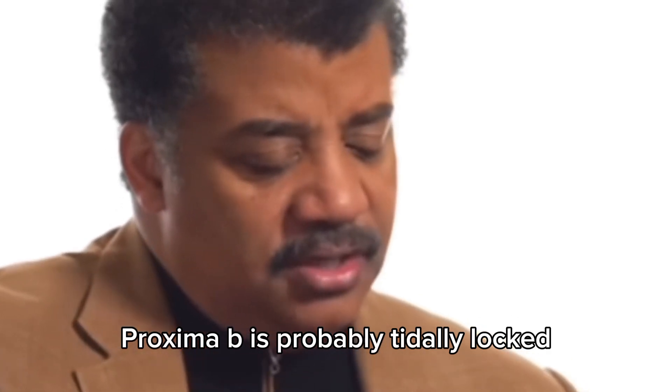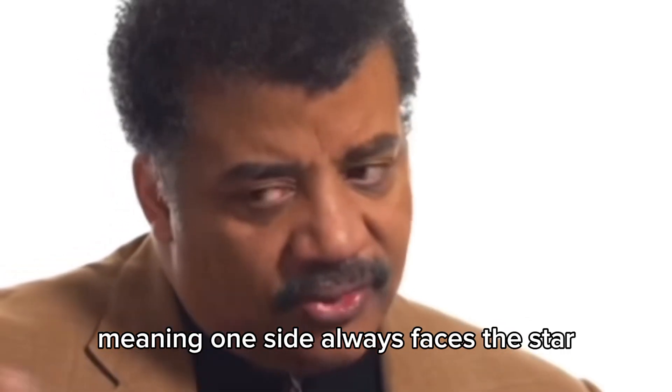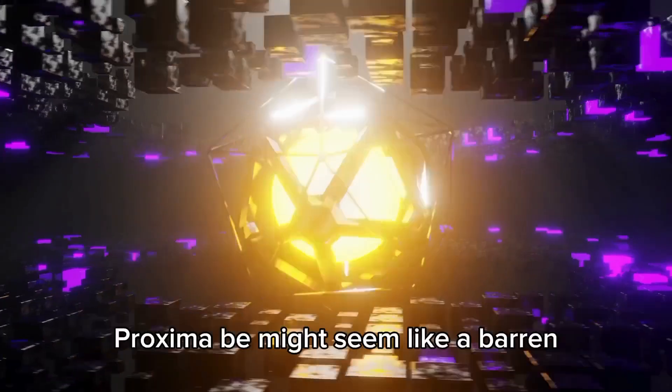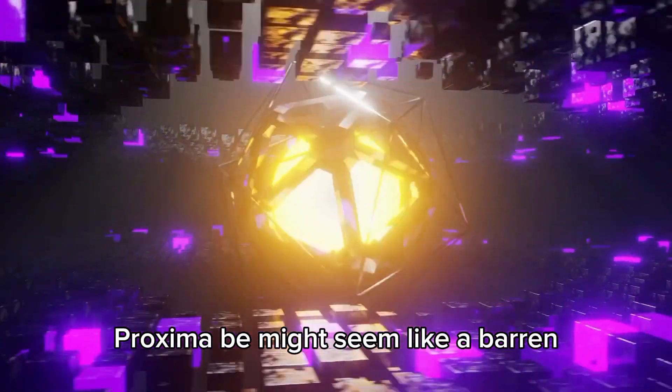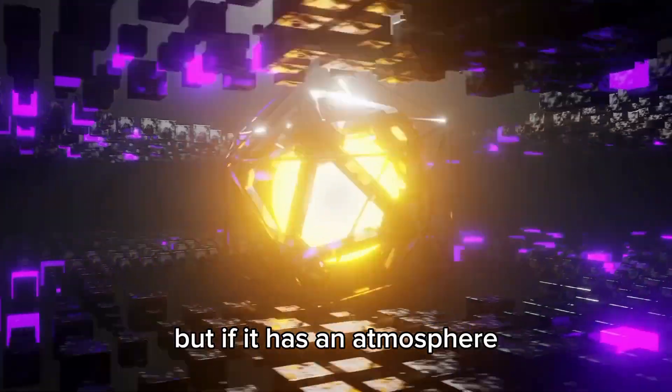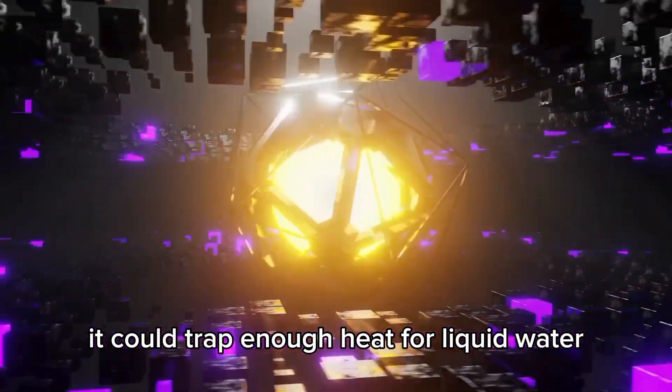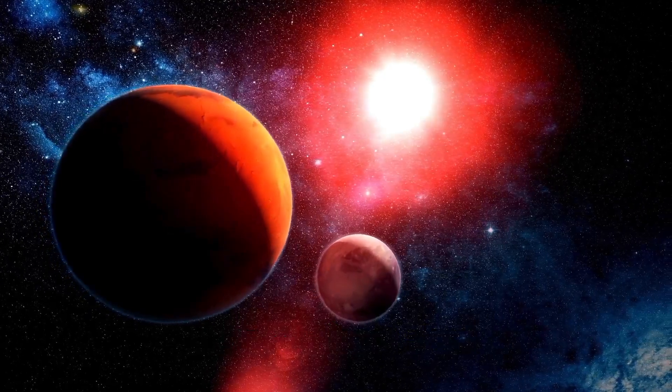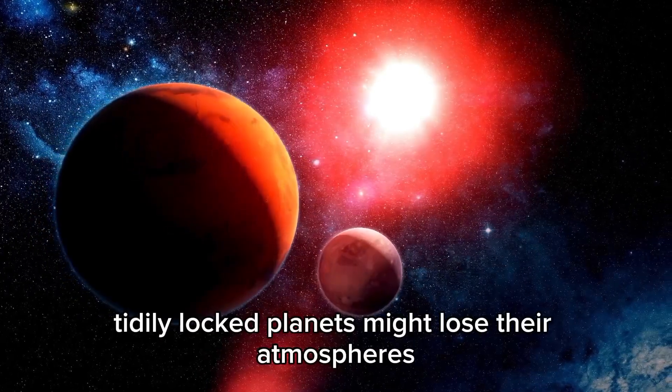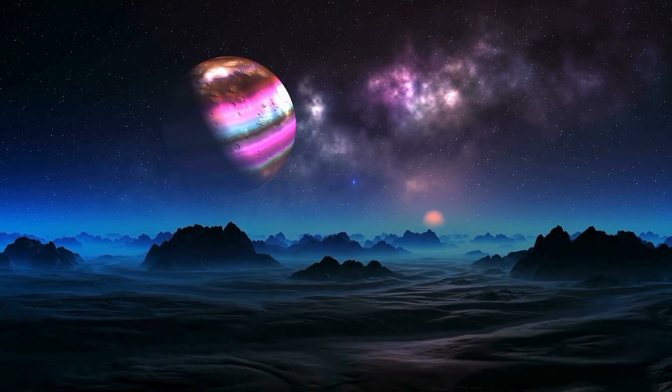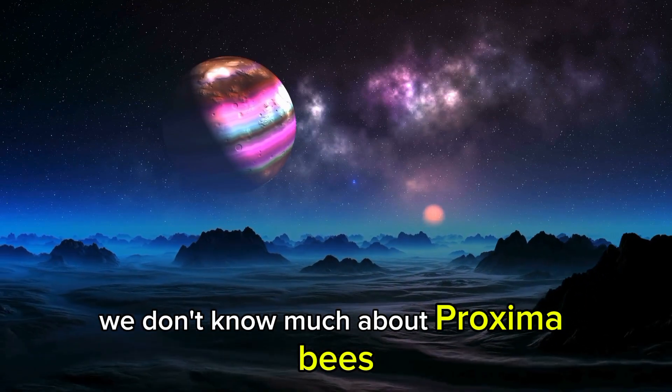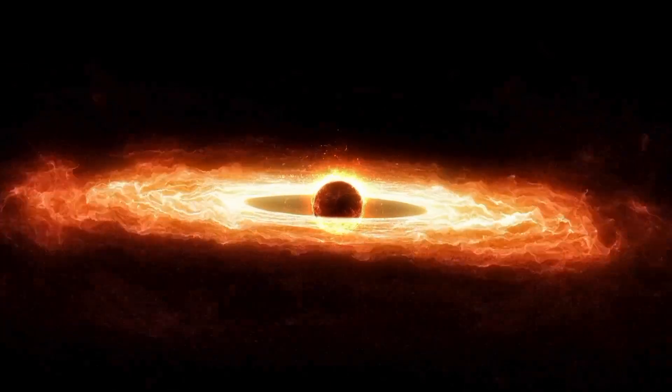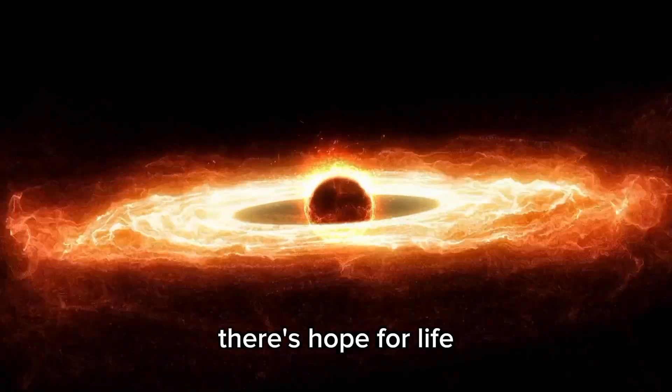Proxima b is probably tidally locked, meaning one side always faces the star. Since Proxima Centauri is dimmer than our sun, Proxima b might seem like a barren, burnt planet. But if it has an atmosphere, it could trap enough heat for liquid water. It might not be super comfy, but it's our best shot. The problem is that tidally locked planets might lose their atmospheres quickly. We don't know much about Proxima b's volcanoes or magnetic field, which could help keep its atmosphere. If it has an atmosphere and oceans, there's hope for life.